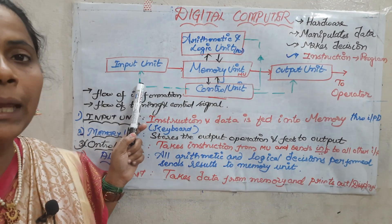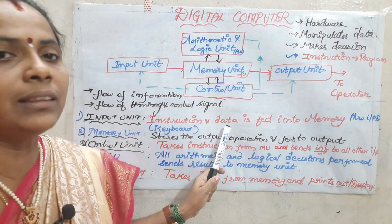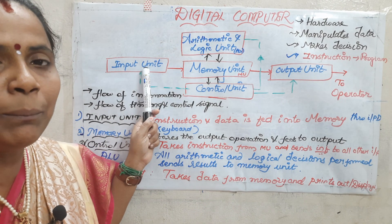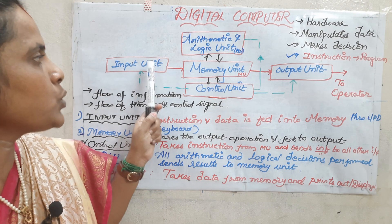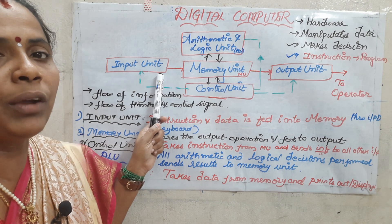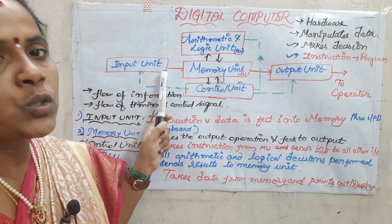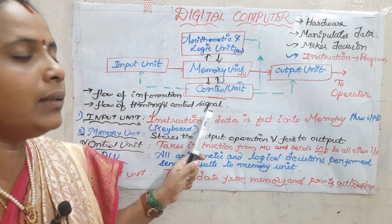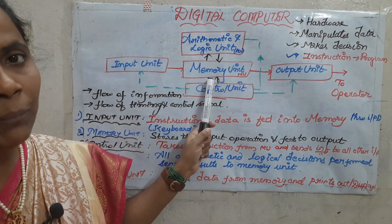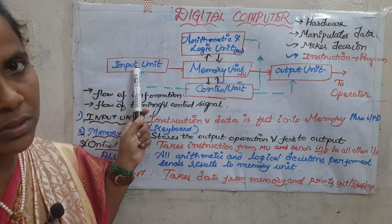The input unit is nothing but it is going to give the instructions and the data. Whatever your instructions are — if I want to type the letter 'a', that is my instruction. If I want to add two numbers, a plus b, then I will give a as 3 and b as 2. This information, instruction, and data is going to be stored in the memory unit. That is a way to give your input data as instructions via the input unit.